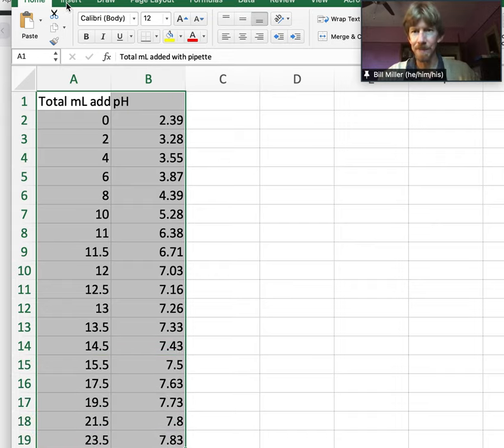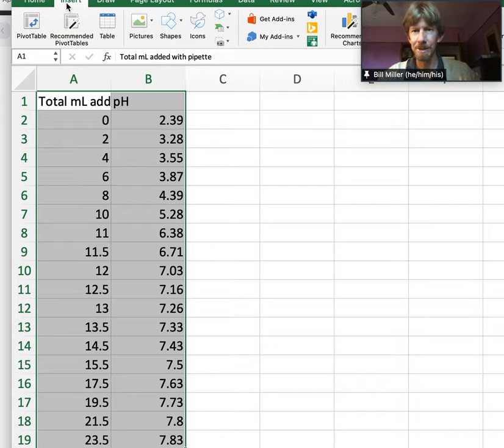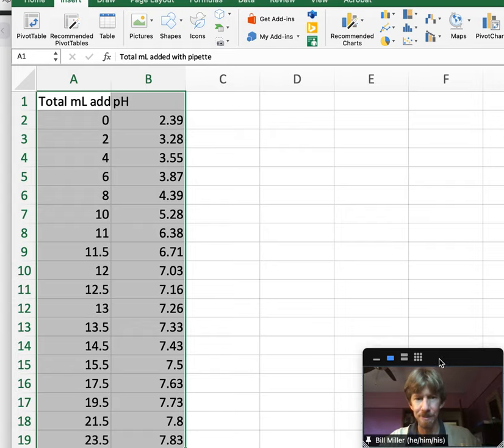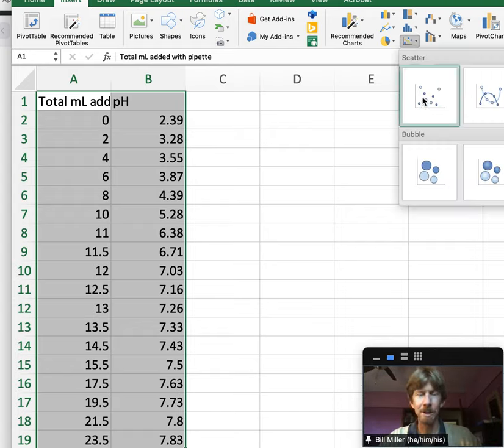Then go to the insert menu, and right underneath is the chart option. You want to chart and do XY scatter.